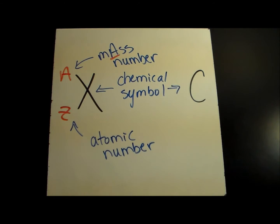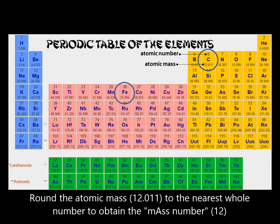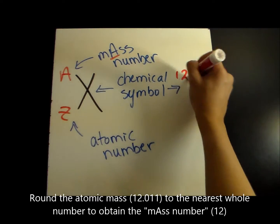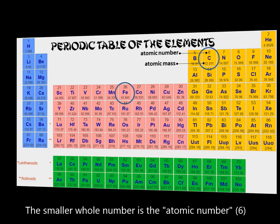Let's look at carbon, which has a chemical symbol of C. Looking at the periodic table, we see the larger of the two numbers is the decimal 12.011, its atomic mass. We round it to the nearest whole number to get the mass number, 12, and write it at the top left. The smaller whole number, 6, is the atomic number Z and is placed on the bottom left.